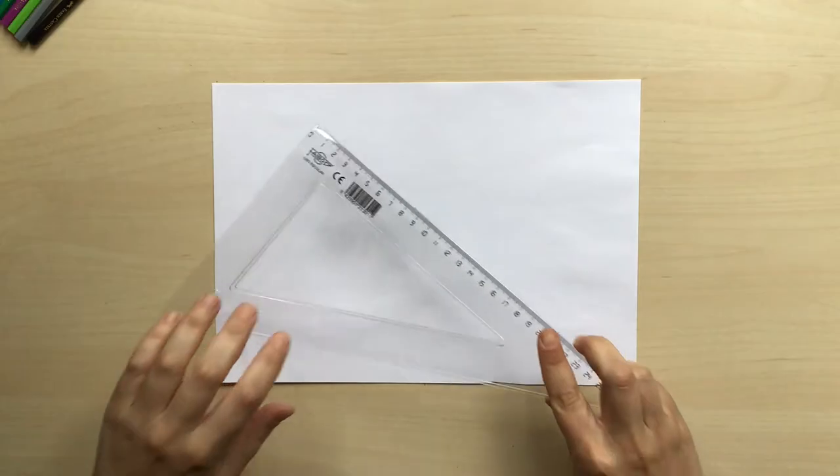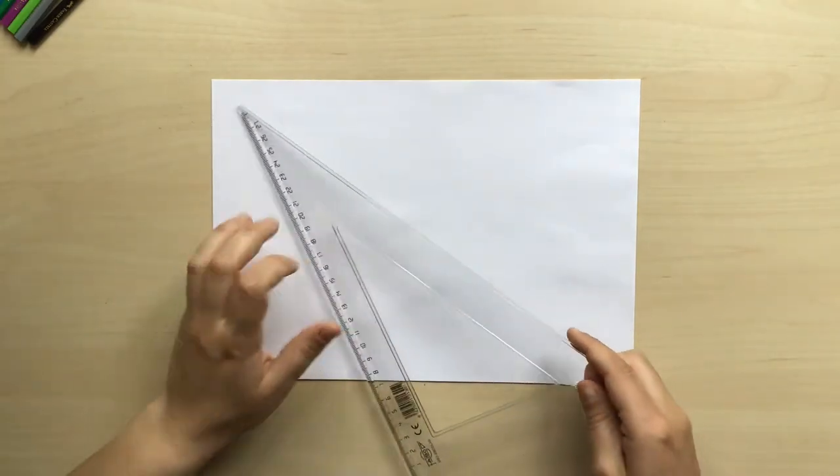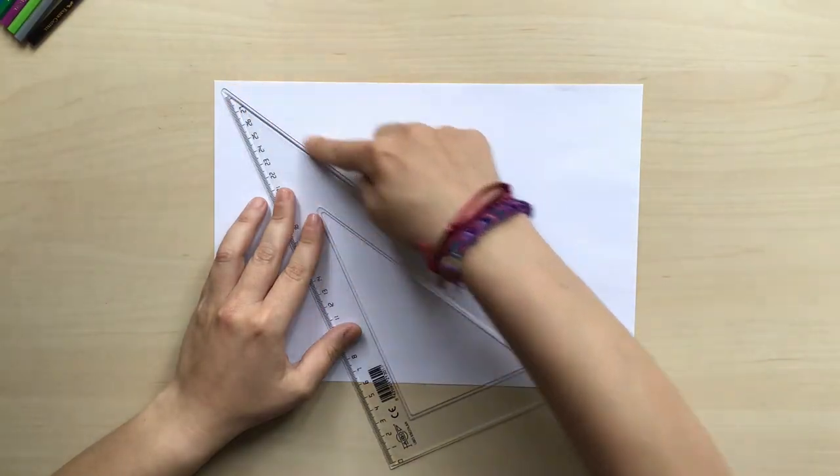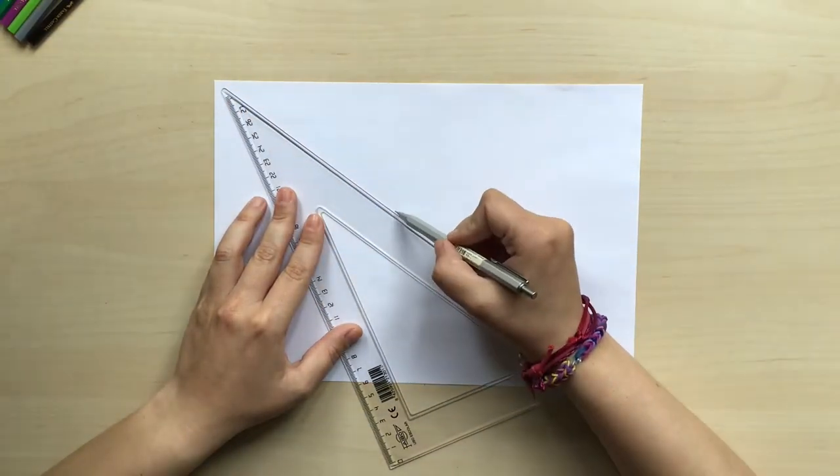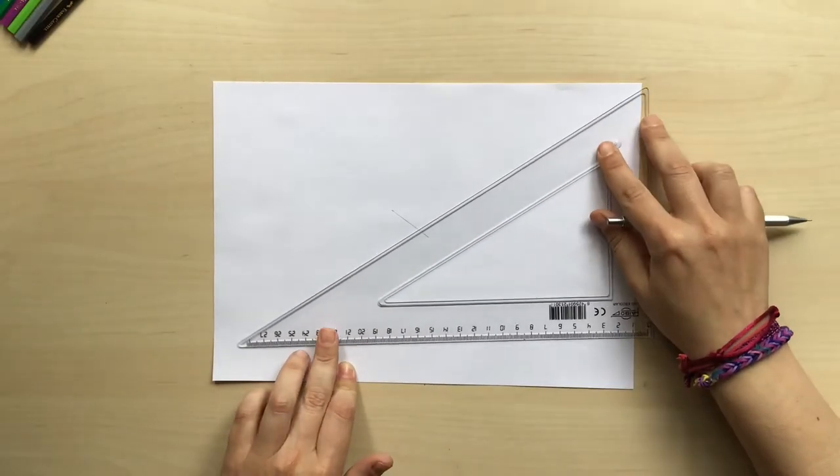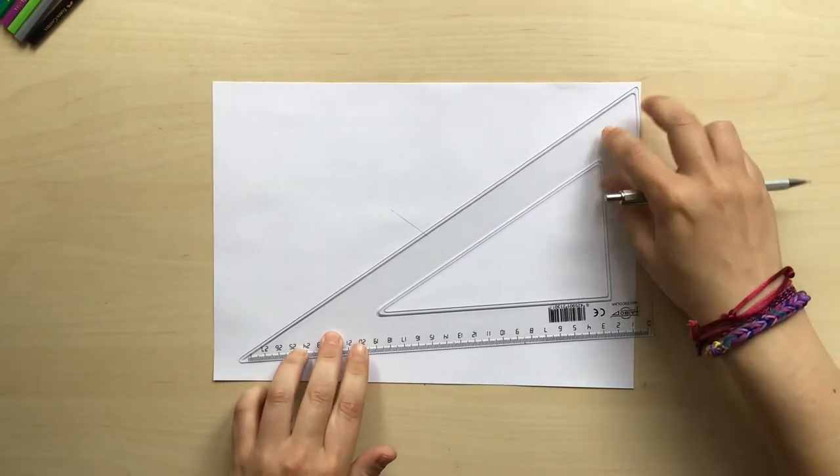First we are going to find the middle of our paper. For that I'm going to use the square set. I'm going to place it diagonally from one side to the opposite side and I'm going to trace a little line with my pencil, and now we're going to do the same thing in the opposite side just like this.